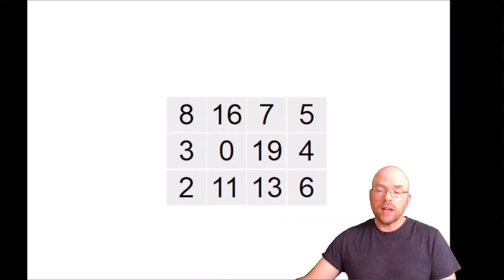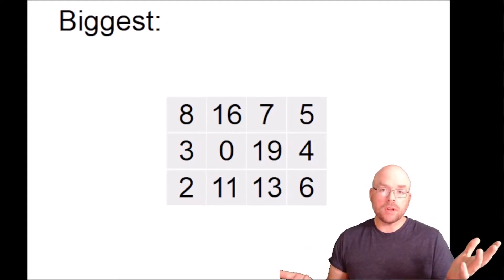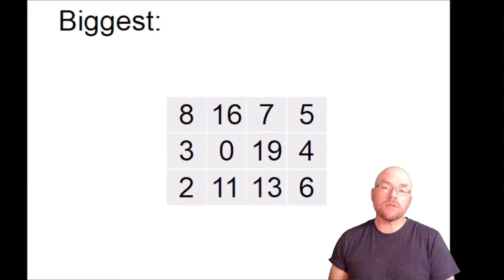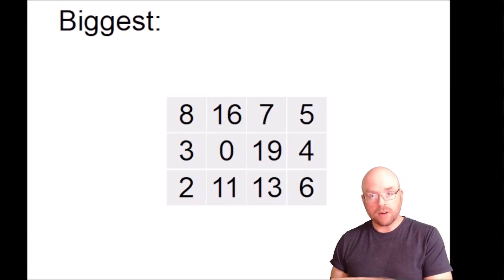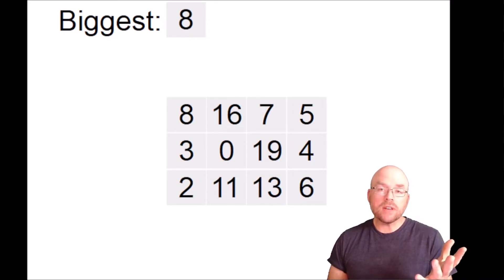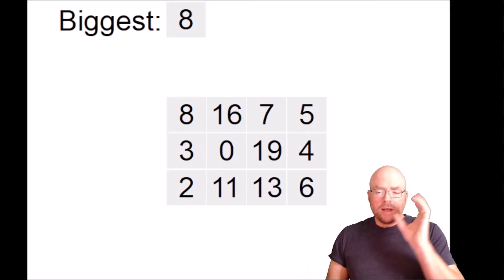Let's go ahead and get started. You can see that I have a representation of a two-dimensional array, a three-by-four array that's just populated with some random numbers I picked. The way this is going to work is we'll have a variable that's going to keep track of the biggest value that we've found in the array so far. We'll start off with eight, the very first value in the array. We've got to start somewhere.